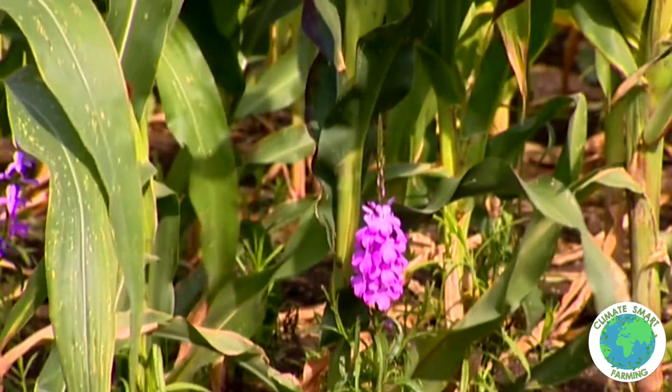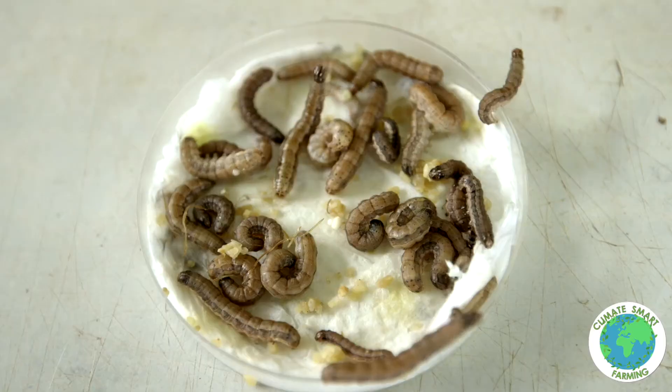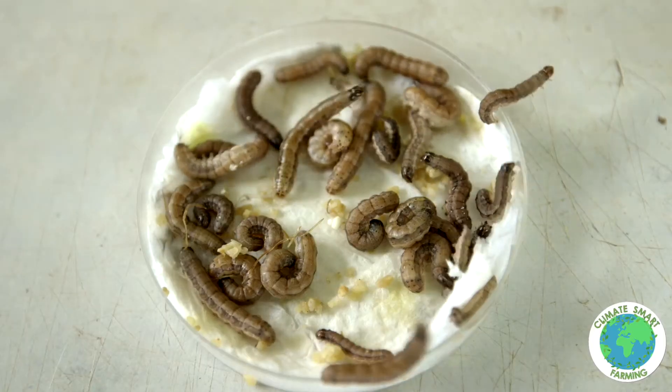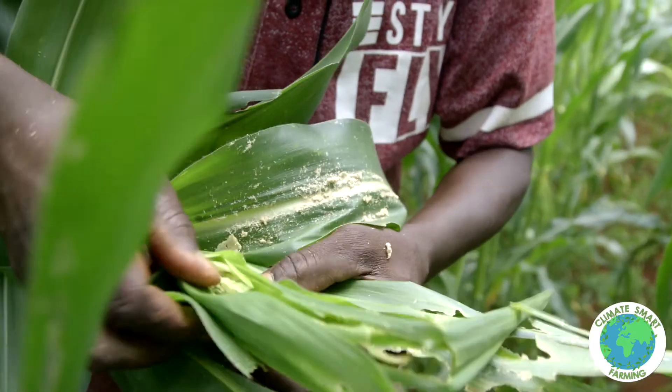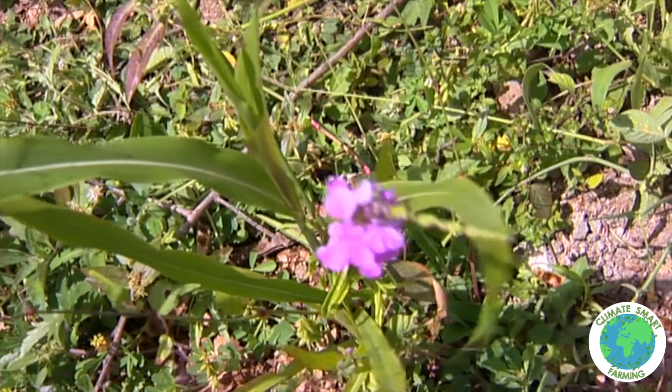Some of the most common pests in maize are fall armyworm, stem borer, and striga weed.